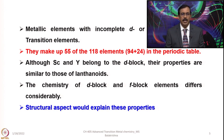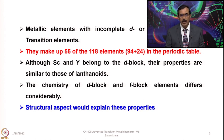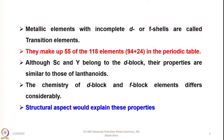The chemistry of D block and F block elements differs considerably, and structural aspects explain these properties clearly. In the D block, we have three series: 3D, 4D, and 5D. Each group of D block metals consists of three members and is called a triad.